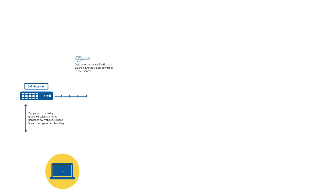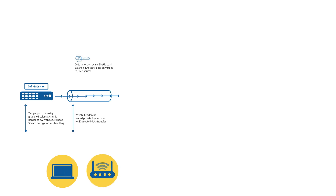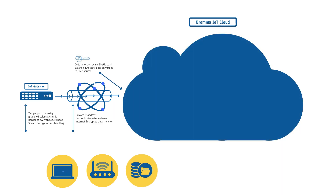Let's have a look at the Brahma Spreader Monitoring System architecture. Data is collected from the spreader's diagnostic system. It is then encrypted and transferred via an IoT gateway communicating over a secure private tunnel. The data is stored in a secure private cloud instance where it can only be accessed by authorized personnel and applications.